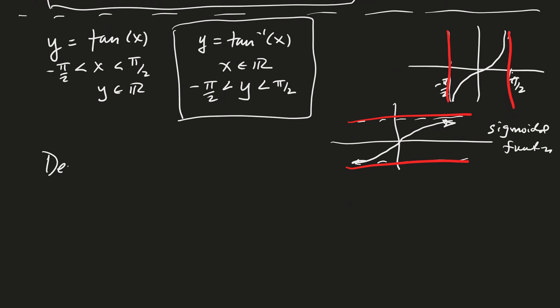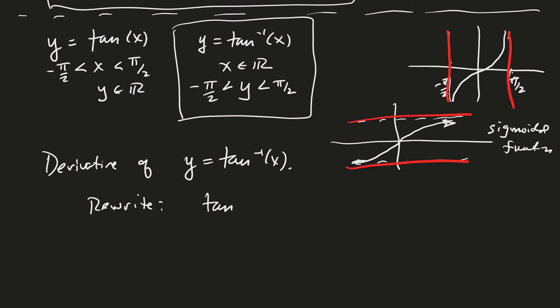Let's find the derivative of y equals inverse tangent of x. I rewrite it as tangent(y) = x and use implicit differentiation. The derivative of tangent is secant squared, so secant²(y) times dy/dx equals 1. Therefore dy/dx equals 1 over secant²(y), which is the same as cosine²(y).